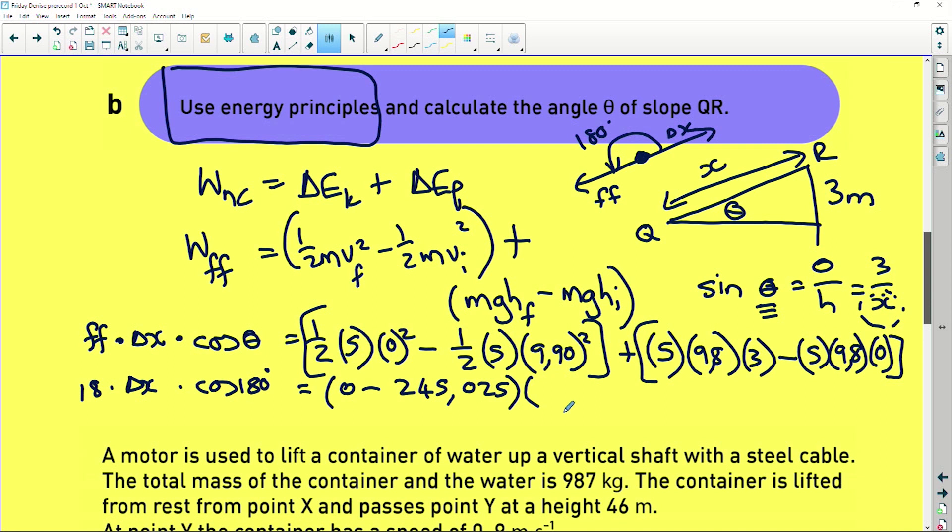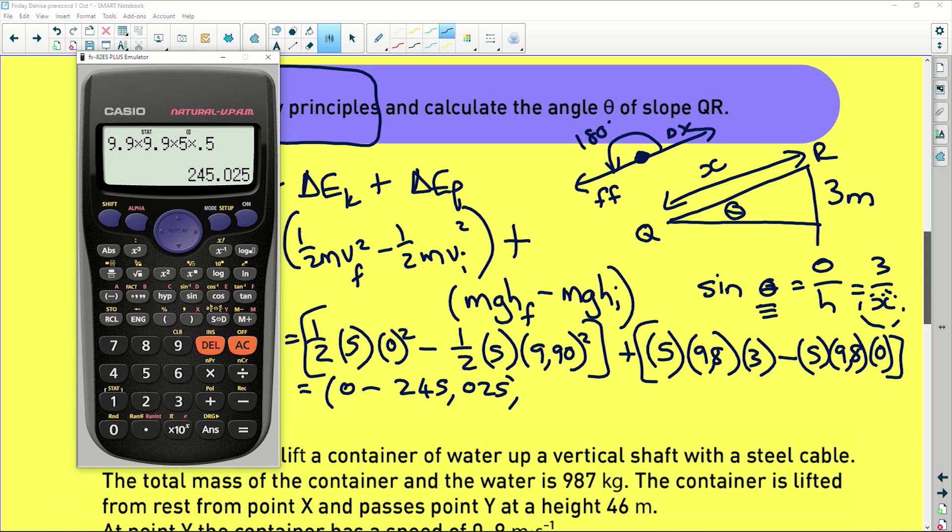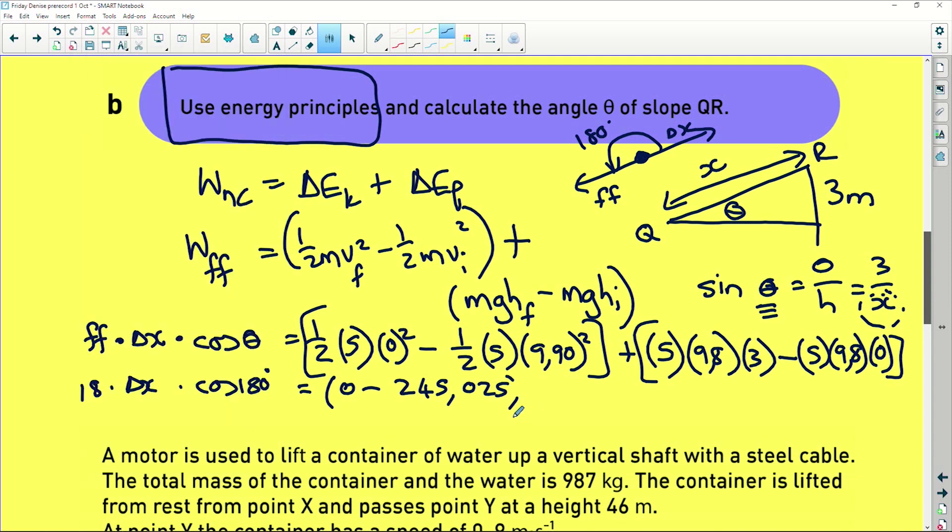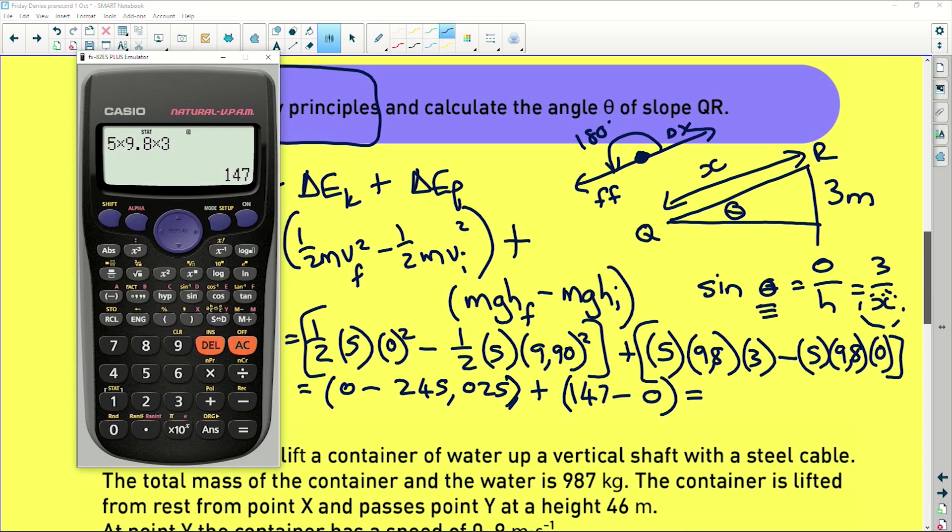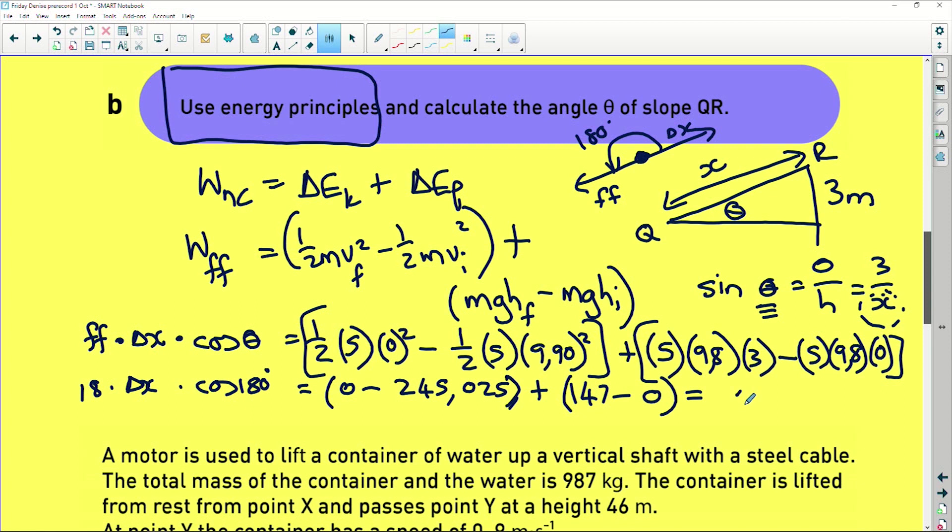And now we need the calculator again. So now we're going to do the next part. So it's going to be 5 multiplied by 9.8 multiplied by 3, and that's 147. So let's close that bracket. Plus 147 minus 0. Now we're going to simplify this. So it's 147 minus 245.025, and that's 98.025. So it's 98.025 and it was a negative.